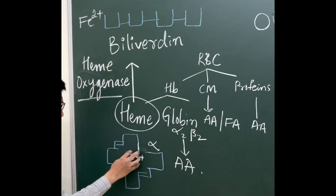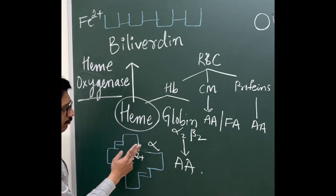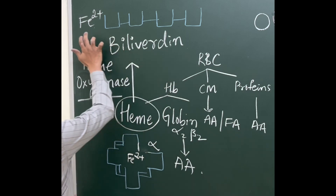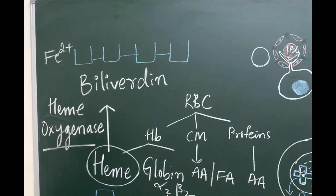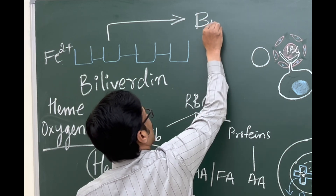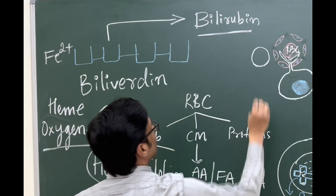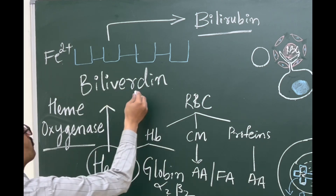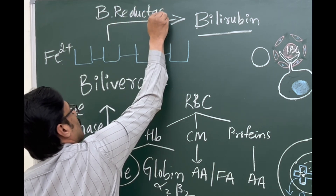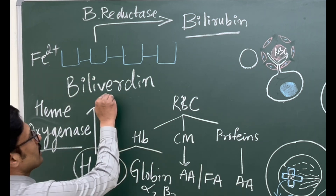In summary, heme is made up of iron and a protoporphyrin ring. The action of heme oxygenase cleaves the alpha bridge in the porphyrin, converting the ring into an open-chain biliverdin and releasing iron. Then, by the action of biliverdin reductase enzyme in the cytoplasm, biliverdin is reduced to bilirubin.